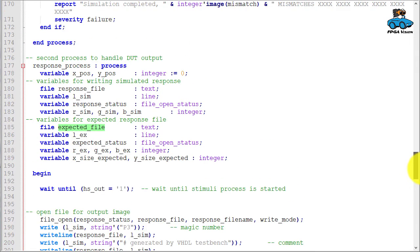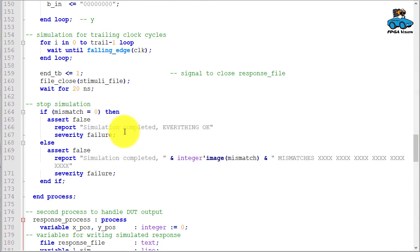Here's the end of the stimuli process. We stop the simulation, but we check if there was a mismatch. If the number is zero, everything is fine. If there was a mismatch, we also give a statement saying that there has been a mismatch. And we give the number of mismatches.